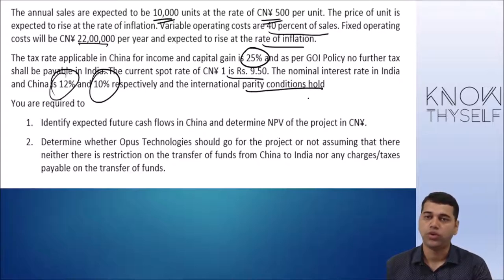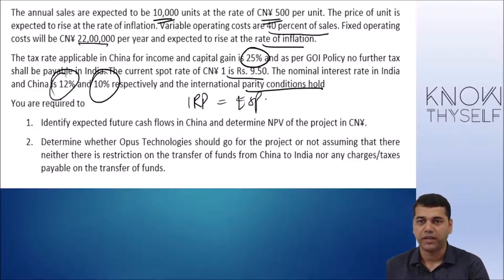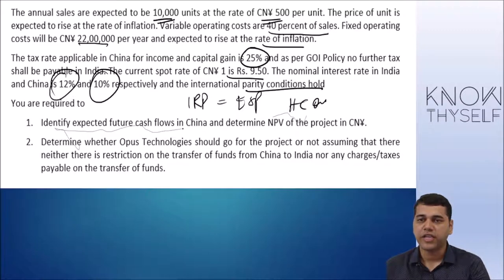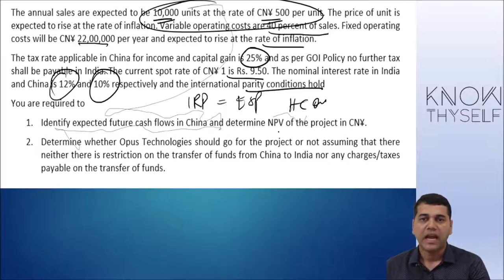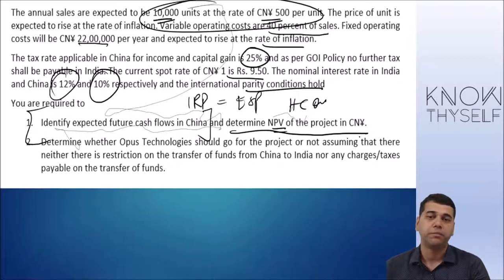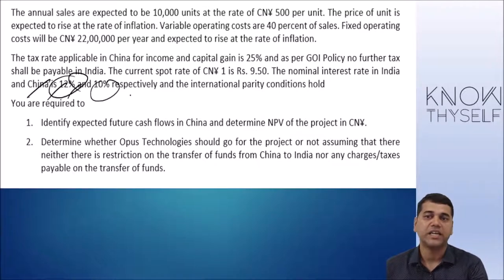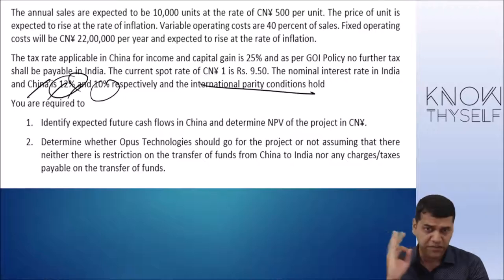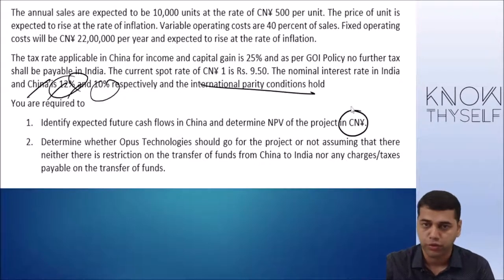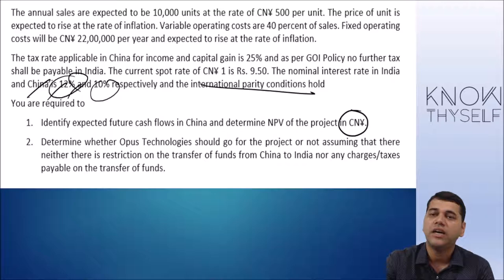Since parity conditions hold, we could use IRP theory to find expected spot prices and follow the home currency approach. However, for the first part of the question, they specifically told us to use the foreign currency approach, not the home currency approach. So we are not going to find out exchange rates for part one.